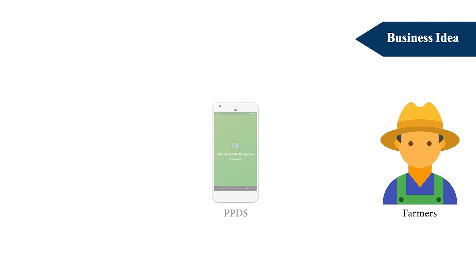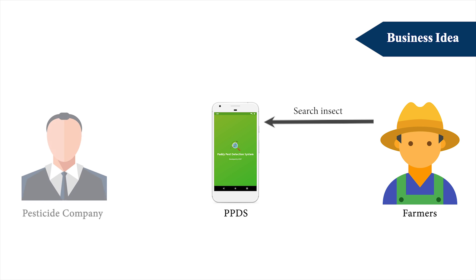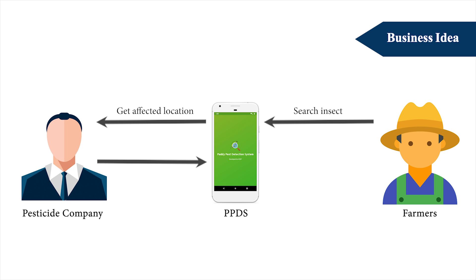For the business use case, when farmers search for an insect, the pesticide company will get the further location and they can prepare to sell their pesticide for the insect in that region. They can also advertise their pesticides to the farmers through the application.